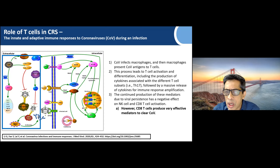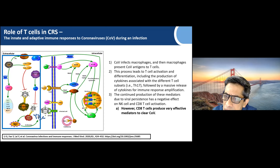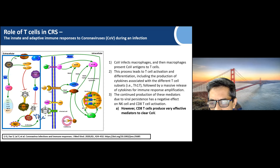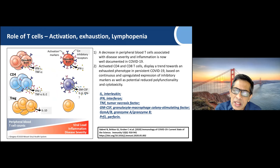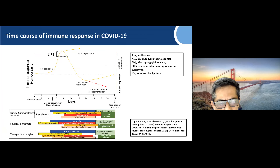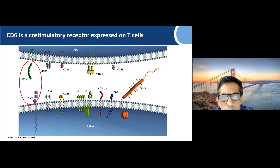T cells in the COVID response are crucial at the cytokine storm. Infected macrophages present the COVID antigen to T cells, which activate and differentiate, making cytokines from different T cell subsets including Th17, releasing a massive cytokine bomb. CD8 T cells produce effector mediators to clear the virus. The role of T cells in activation, exhaustion, and lymphopenia is well illustrated — when there is immunopathology of COVID, there is depletion and exhaustion of lymphocytes, increased neutrophils, cytokines from induction, and antibody-dependent enhancement.